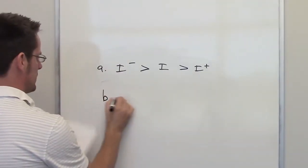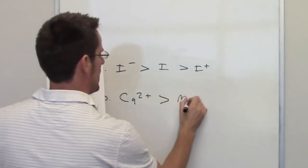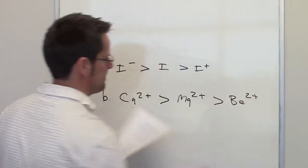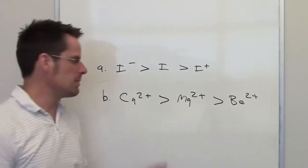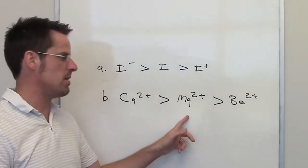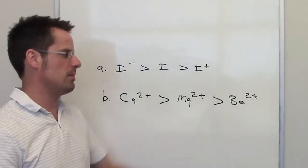In the second problem, we're asked to explain this observation, that calcium cation is larger in size than magnesium cation, which is larger in size than beryllium cation. As you look at the periodic table, you'll notice that calcium is located directly beneath magnesium, which is located directly beneath beryllium on the periodic table.